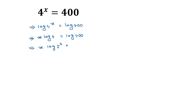So log of 2 squared is equal to log of 400. The 400 can be written as 16 times 25, and 16 is 2 to the power 4, times 25 which is 5 squared. So 2 to the power 4 times 5 squared equals 400.